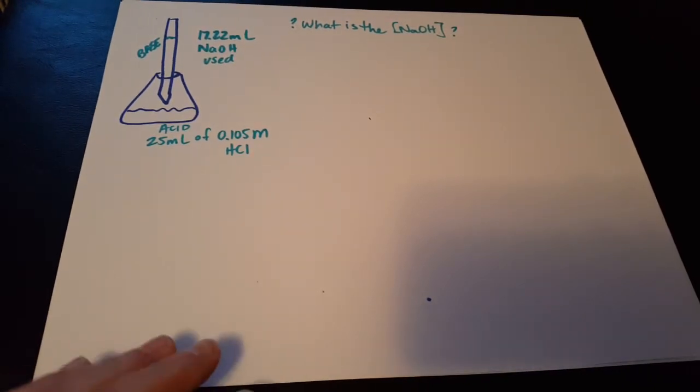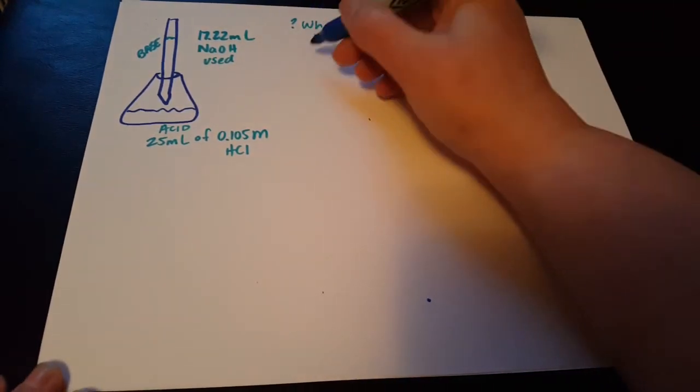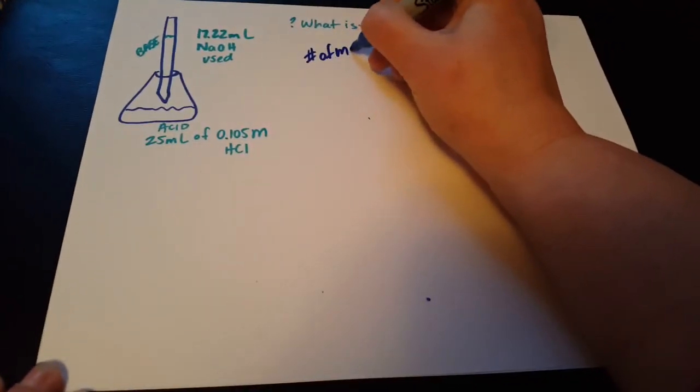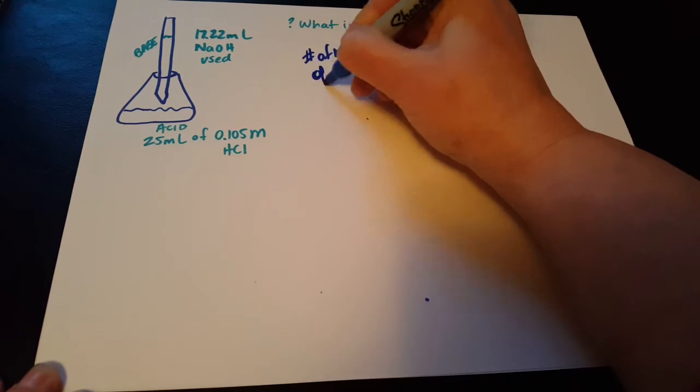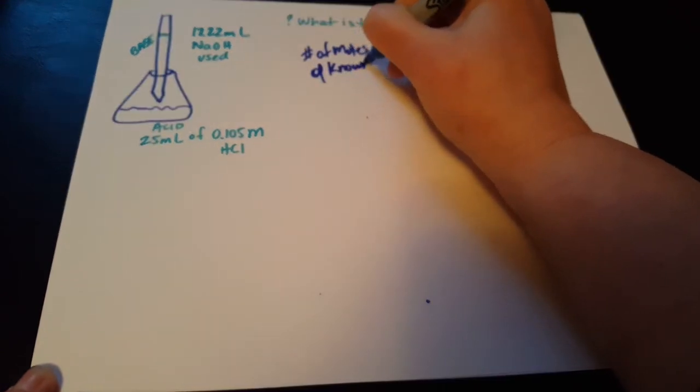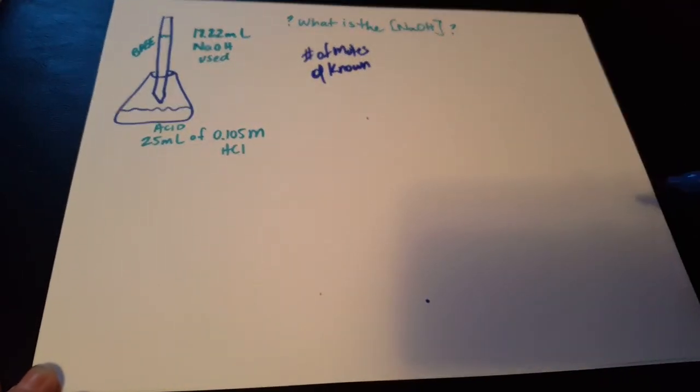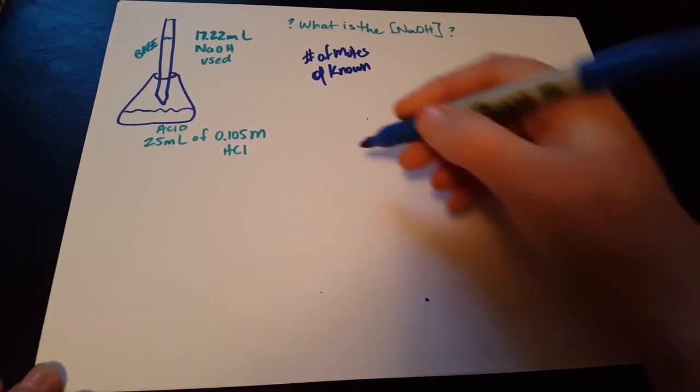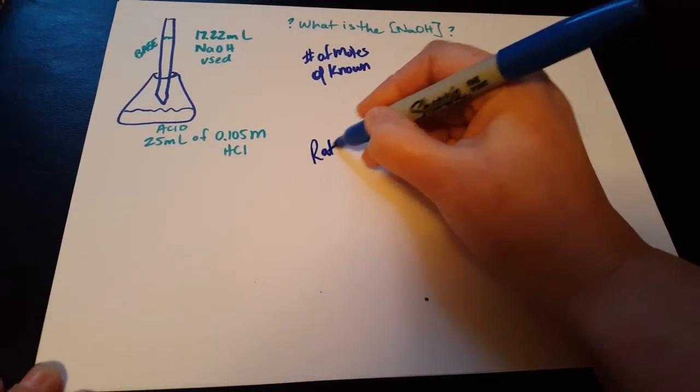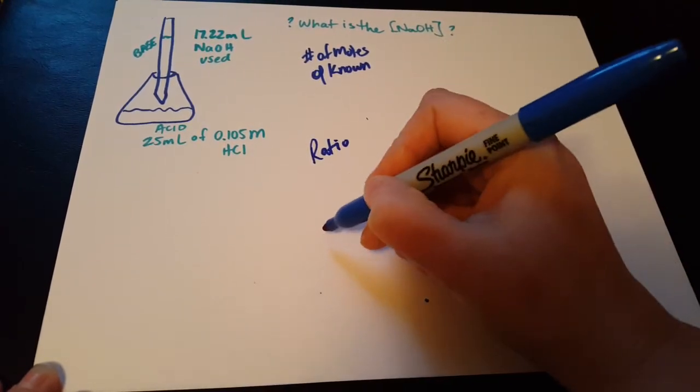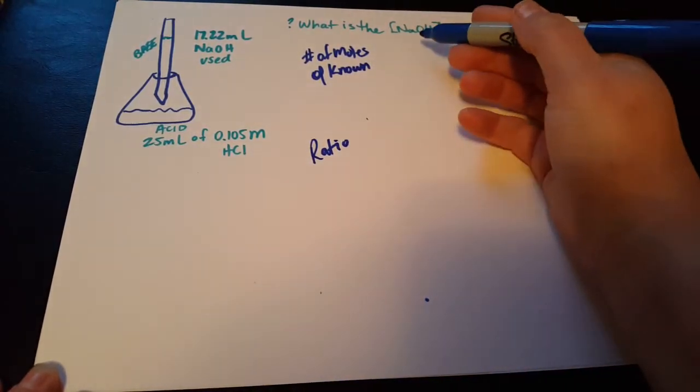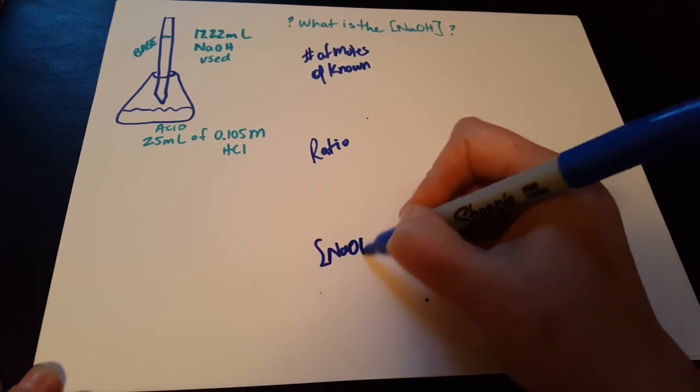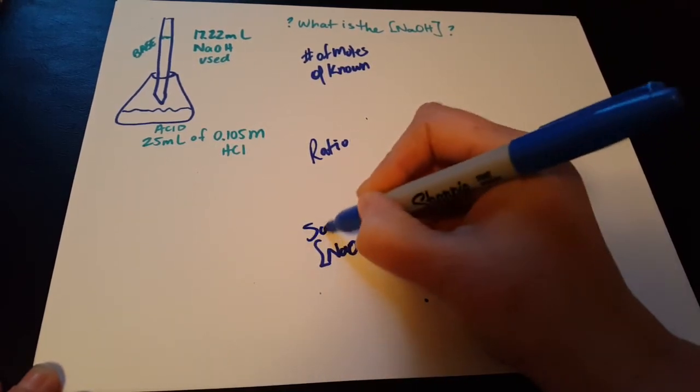We'll do our same three steps where initially we're going to find the number of moles of the known. So one of these two substances, we know both volume and concentration. We're going to verify our ratio, and then we're going to find the concentration of the NaOH. The last step is always solving for an unknown.